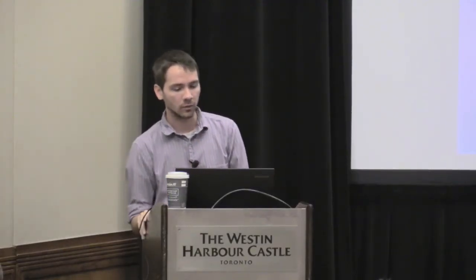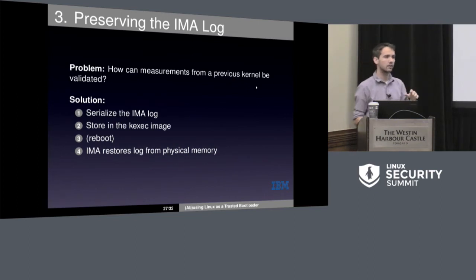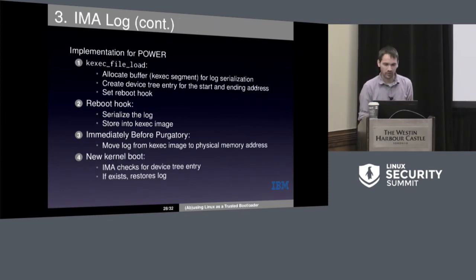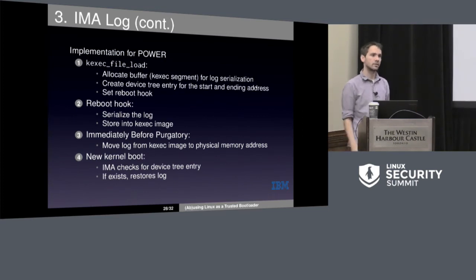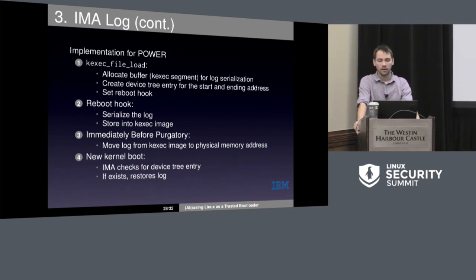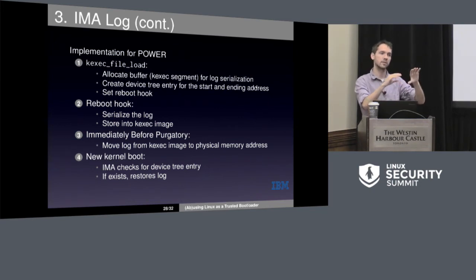Finally, preserving the IMA log — somehow we need to validate the PCRs on the other side. The solution is not as easy. We have to somehow take some memory and make sure it lasts through this. What we end up doing is serializing the IMA log, storing a reference to it in the kexec image, doing the reboot, and then IMA on init checks for this. It's a little complicated for power — since we're using the device tree, we end up creating nodes to say the memory that exists for the IMA log exists from here to here. If IMA finds these nodes, then it loads the log from there. All new entries would be appended onto that, so you'd end up having two boot aggregates, and any measurements from your bootloader would exist prior to the second boot aggregate.